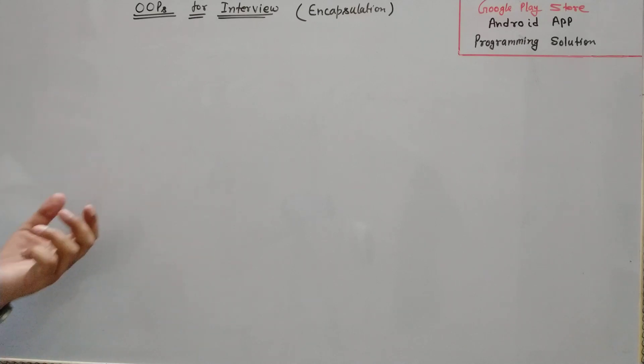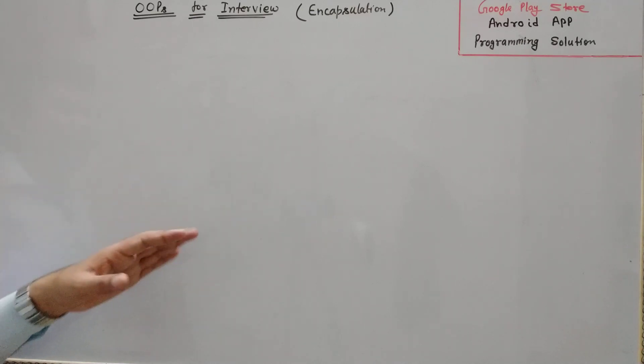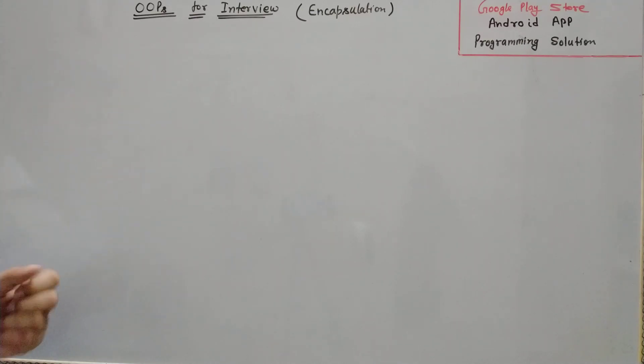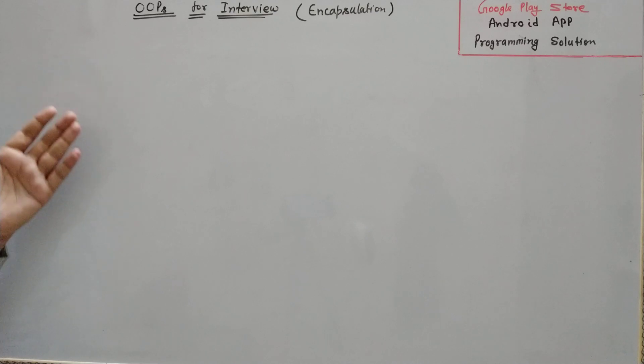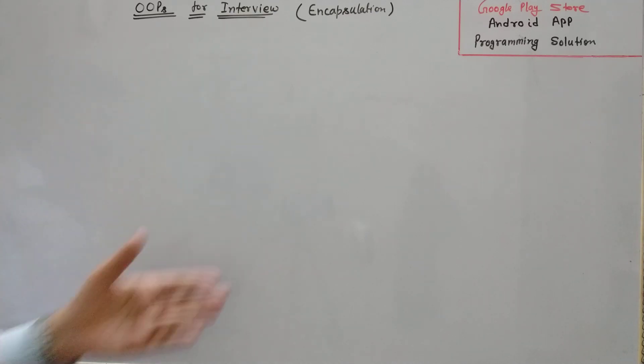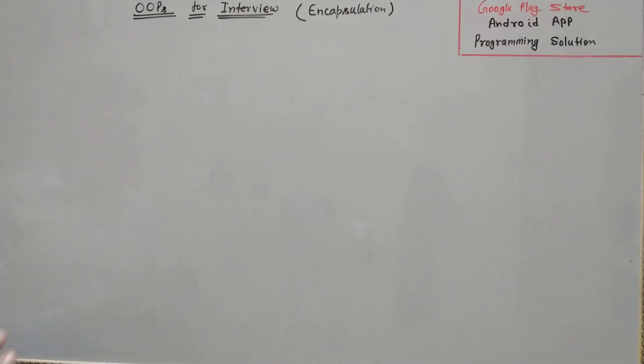What this means is that if we can wrap data members and member functions into a unit or a bundle, so that no one outside of that bundle can change these properties — encapsulation means no one can alter these properties. We can explain it with the help of a class, so let's define a class.